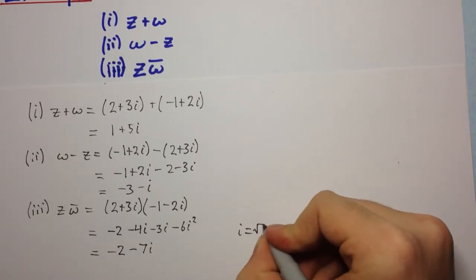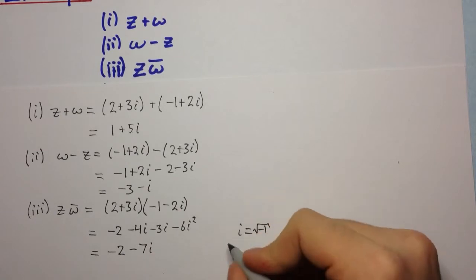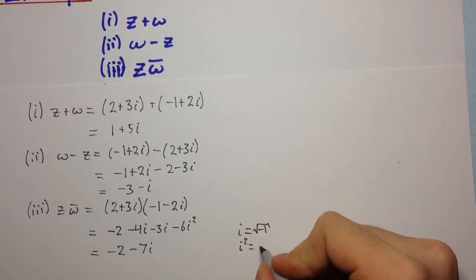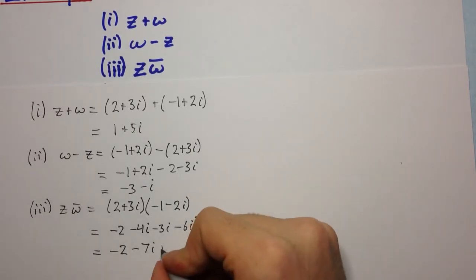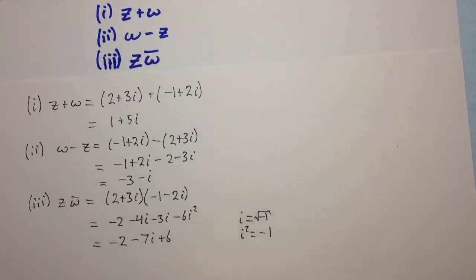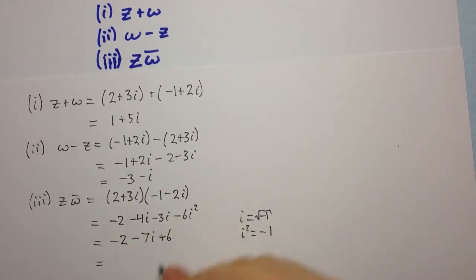We get minus 2 minus 4i minus 3i is 7i, and minus 6i squared. Remember that the square root of minus 1 was i, so i squared equals minus 1. Wherever we see i squared, we can equate that with minus 1. Here we have a minus minus 6, which is plus 6. Negative 2 plus 6 is 4 minus 7i, and that's your final answer.